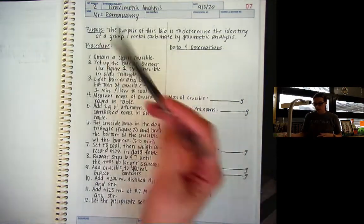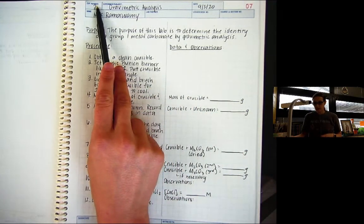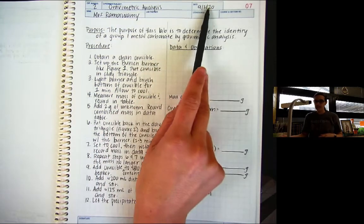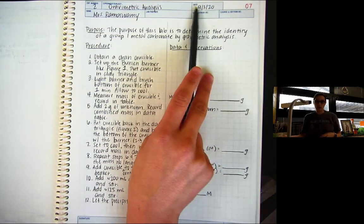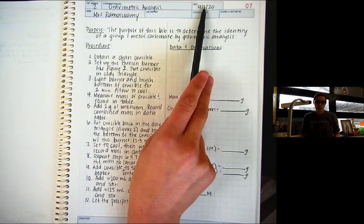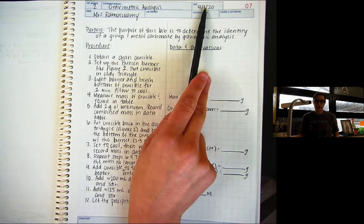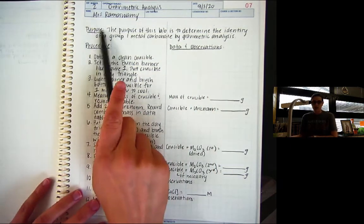Remember, in your lab notebook, you should always fill in experiment number, title, name, and date up at the top. You can put today's date, whatever date you start, the pre-lab can go up at the top. Then you have purpose.